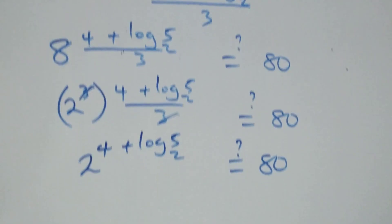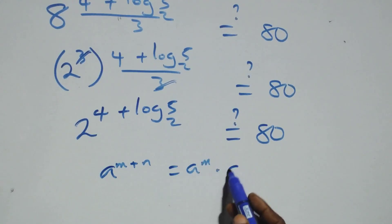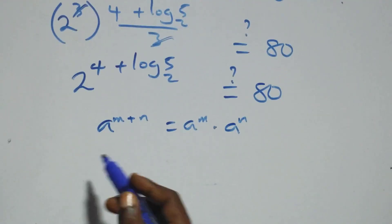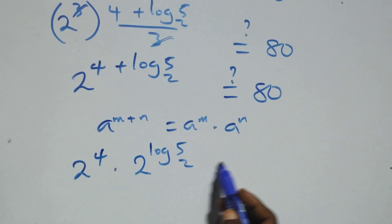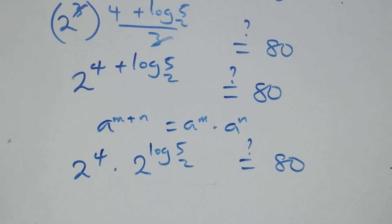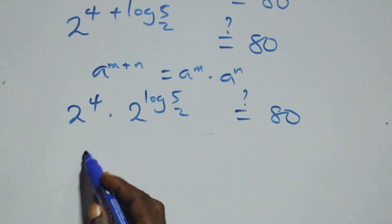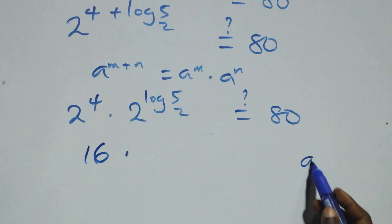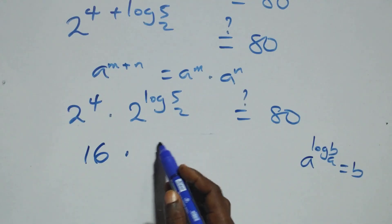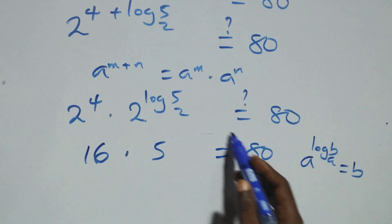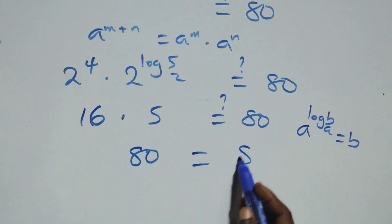Using the exponent rule a^(m+n) = a^m times a^n, we have 2 raised to power 4 times 2 raised to power log₂5. Now 2⁴ equals 16. And using the identity a^(log_a b) = b, we get 2^(log₂5) equals 5. So we have 16 times 5, which equals 80, matching the right-hand side.